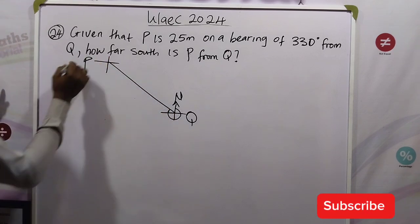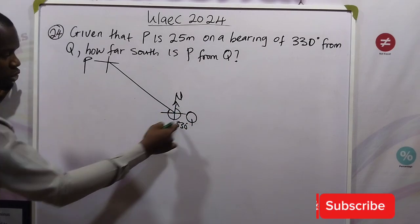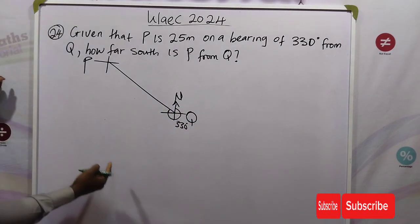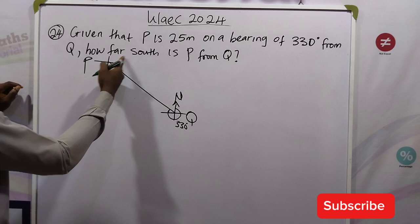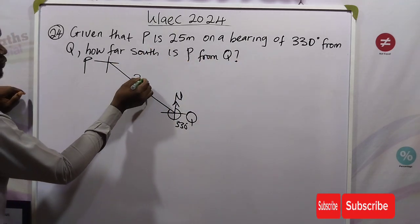So P would be at this position. Here is 330 degrees, the angle we turned. Now the question says, how far south is P from Q? Remember that this length is 25 meters.